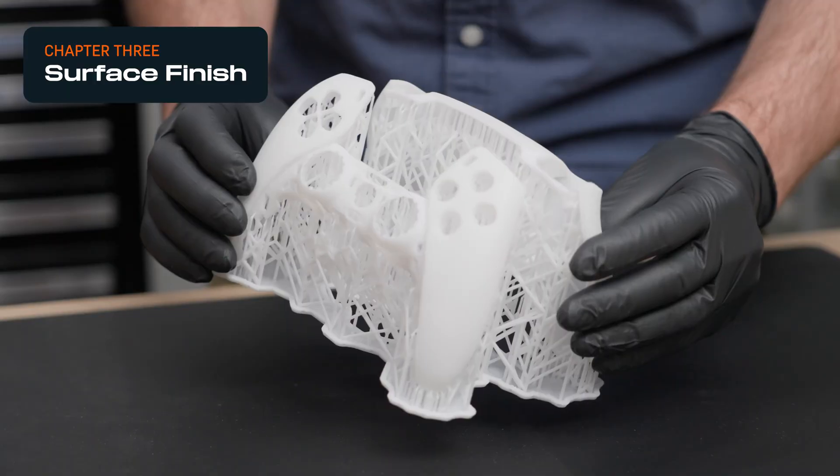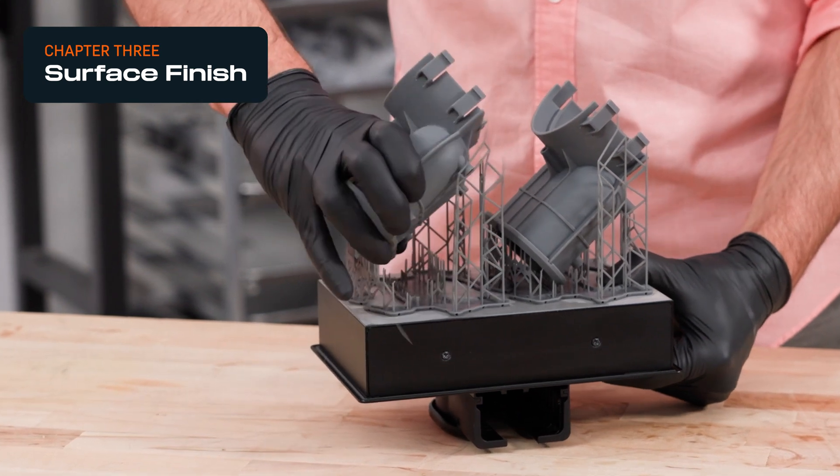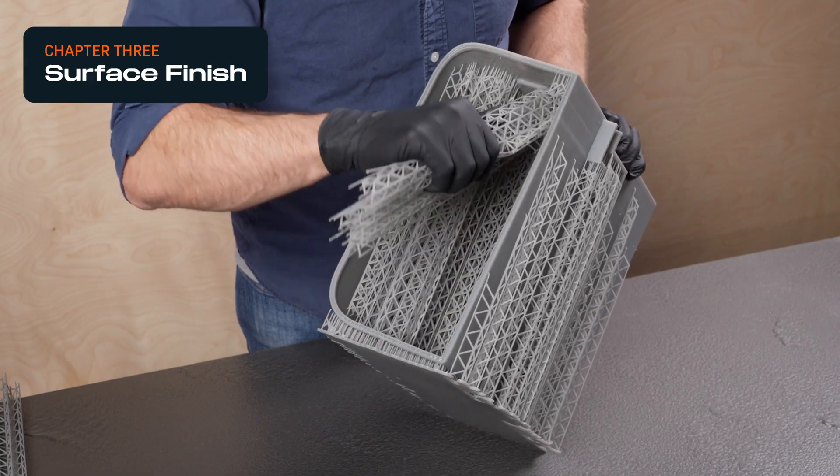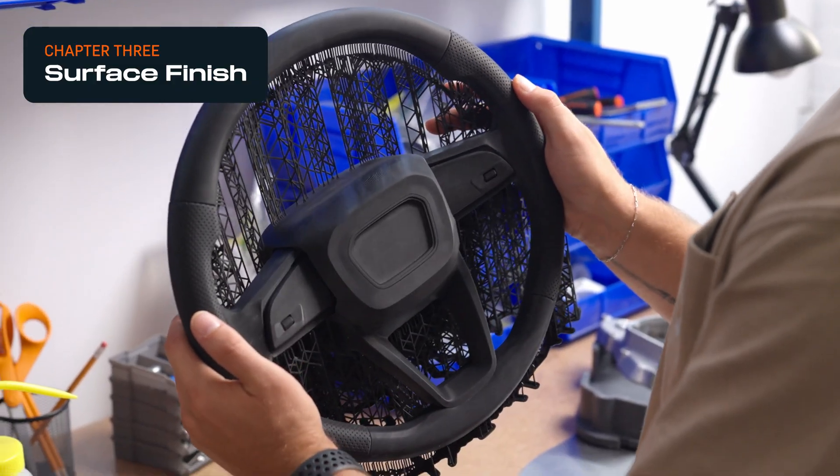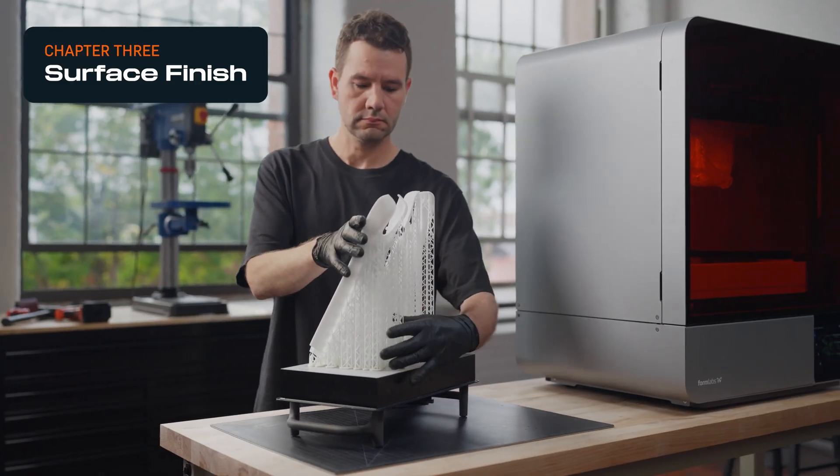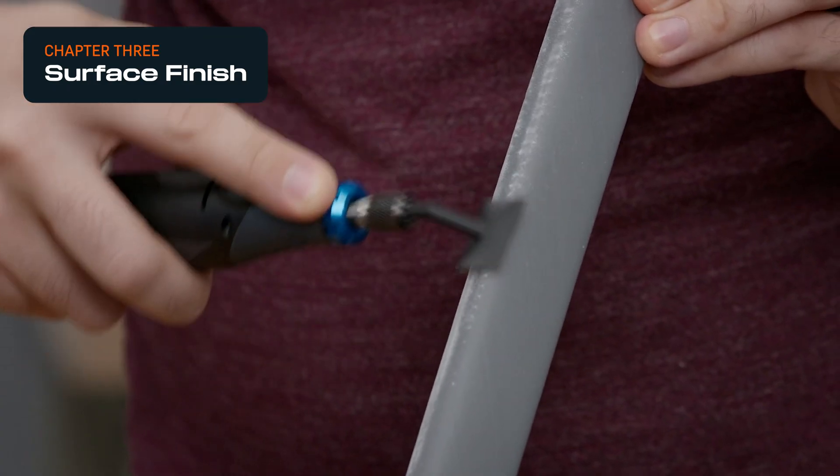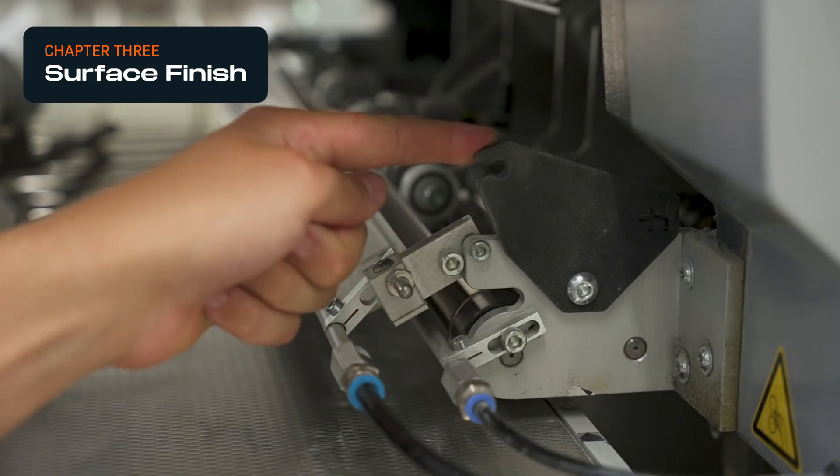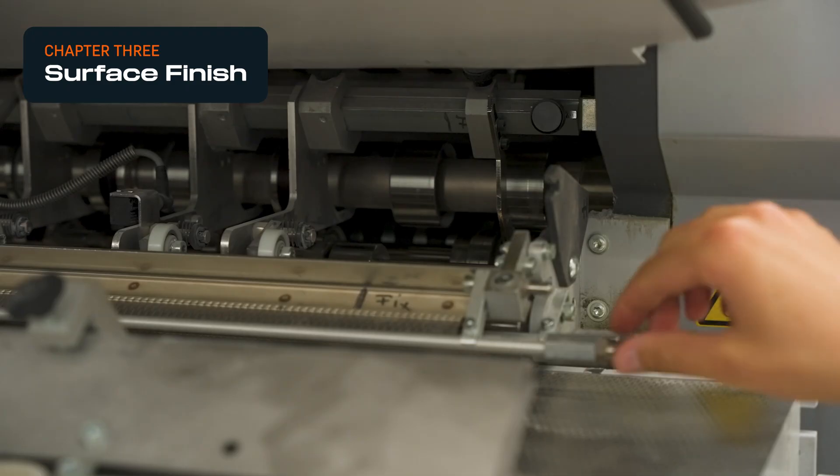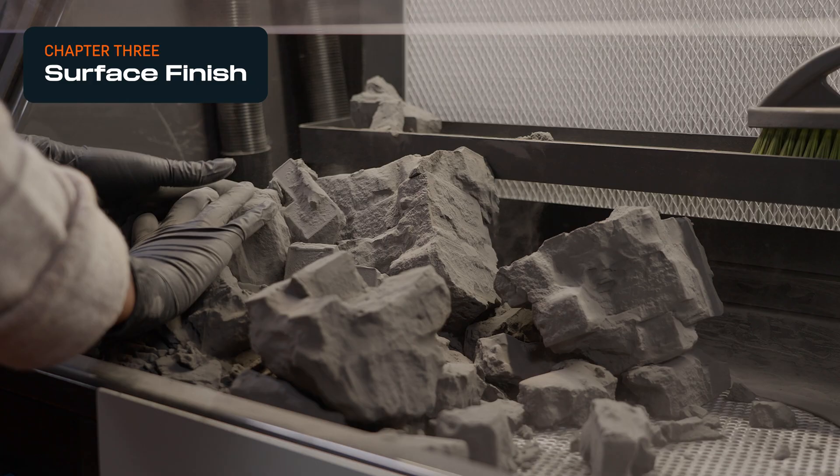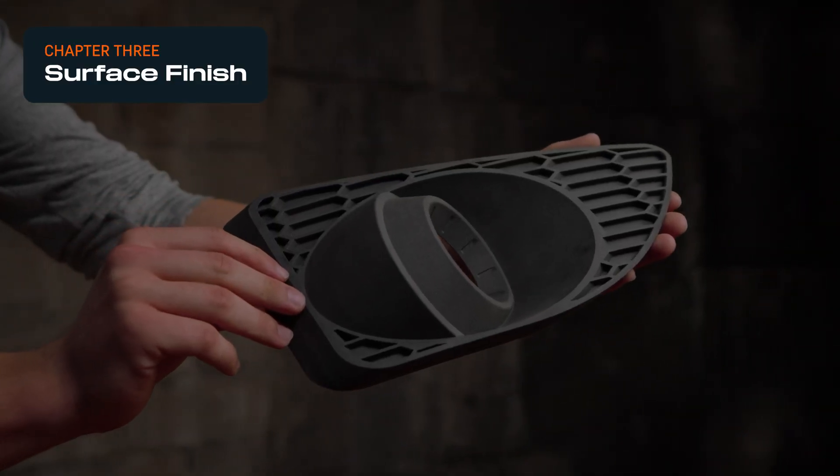Similarly to FDM, SLA parts that were printed on supports need these to be removed. But this can be fairly simple with advanced SLA 3D printers that use light-touch supports, and the support marks are smaller, making them easier to sand away than those on FDM parts. SLS 3D printed parts have a slightly rough or grainy surface finish. However, because SLS parts don't print with support structures, it's easy to achieve a uniform surface finish across the entire part.